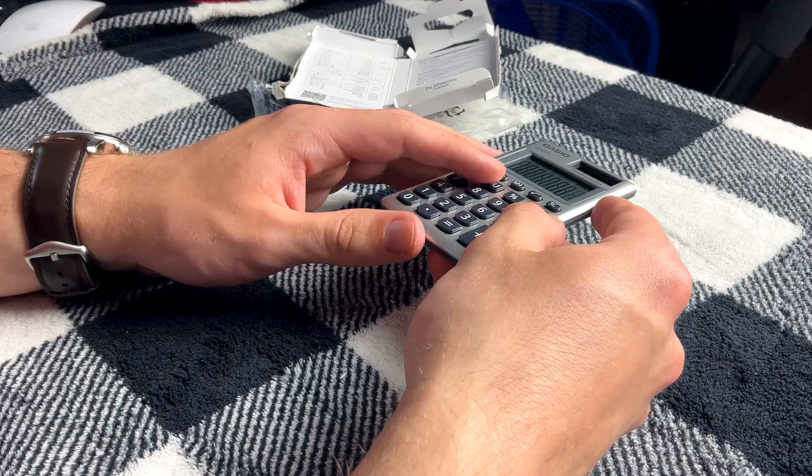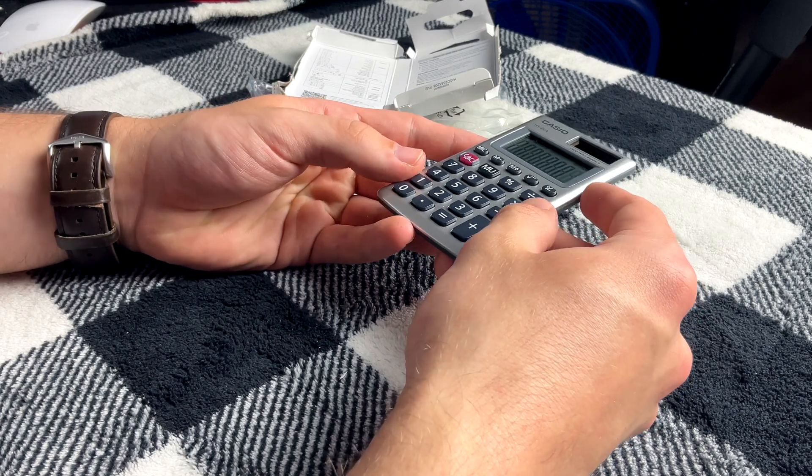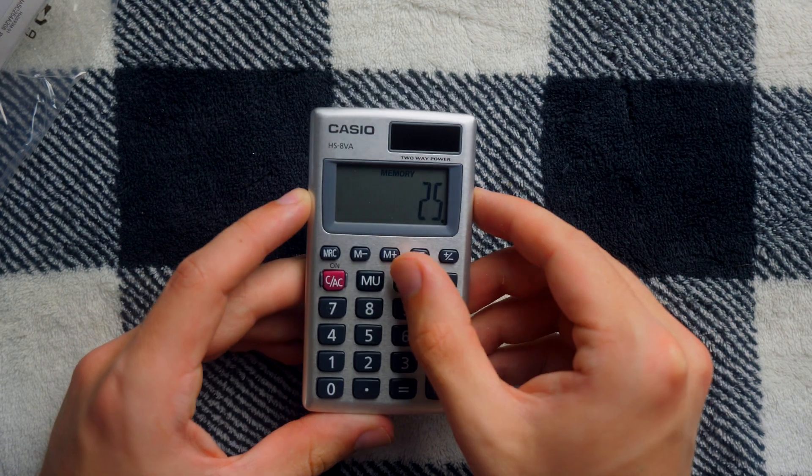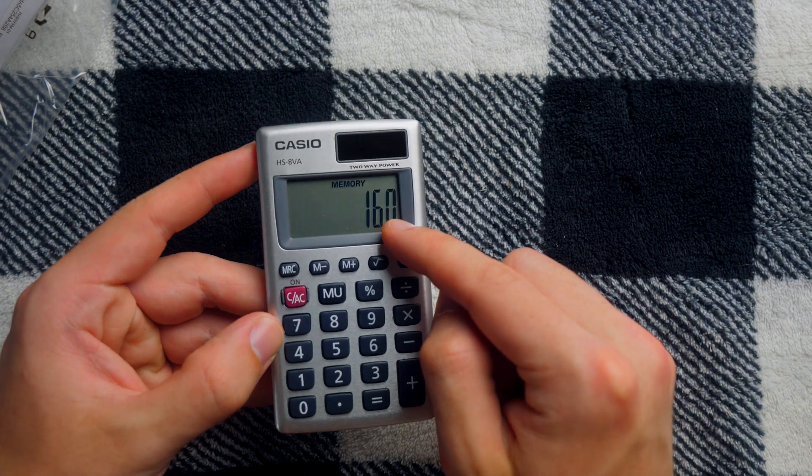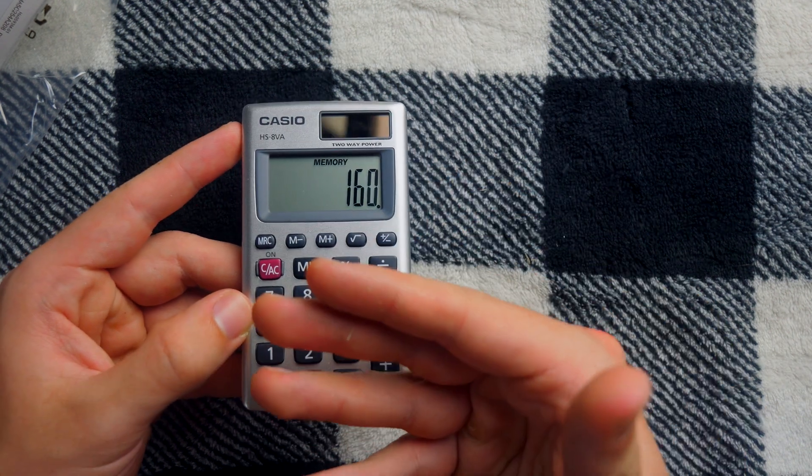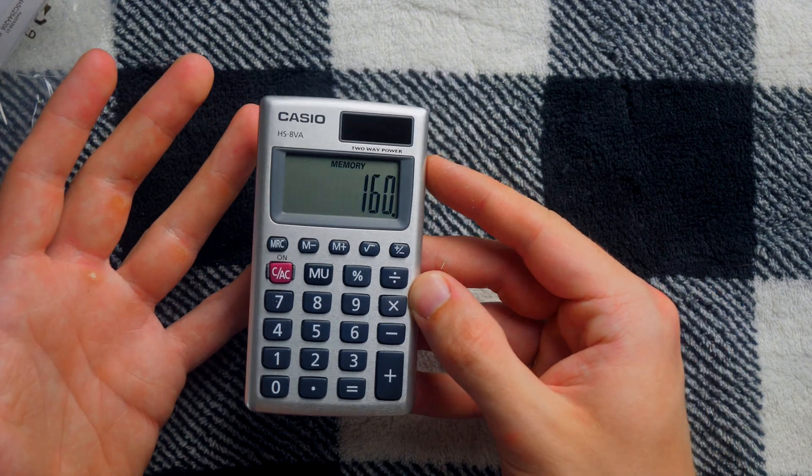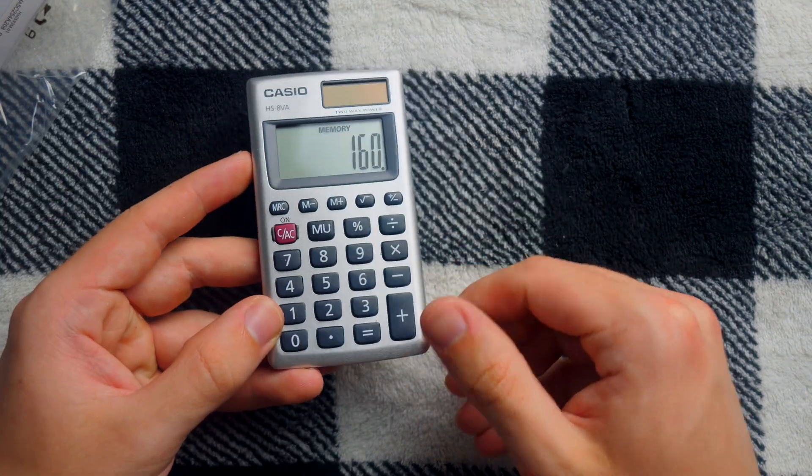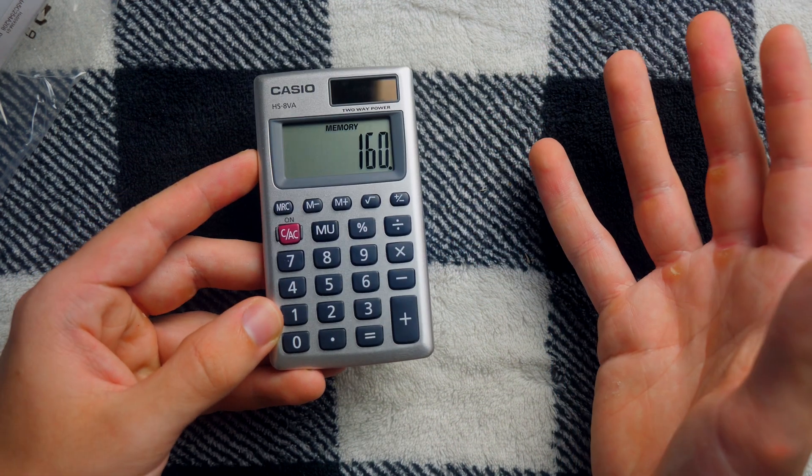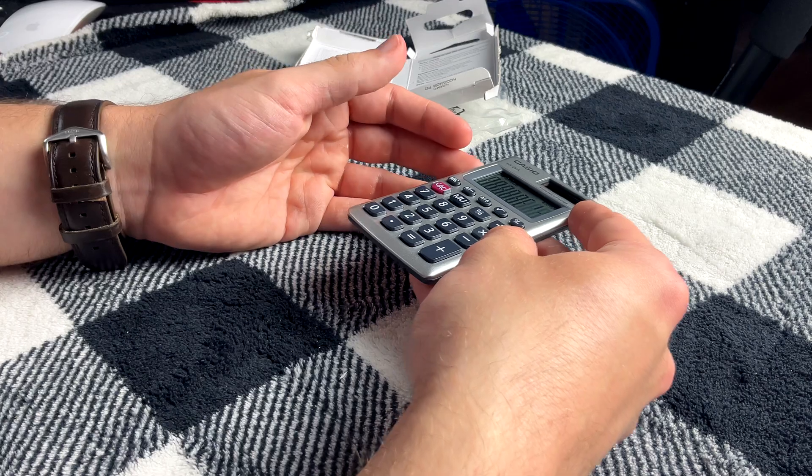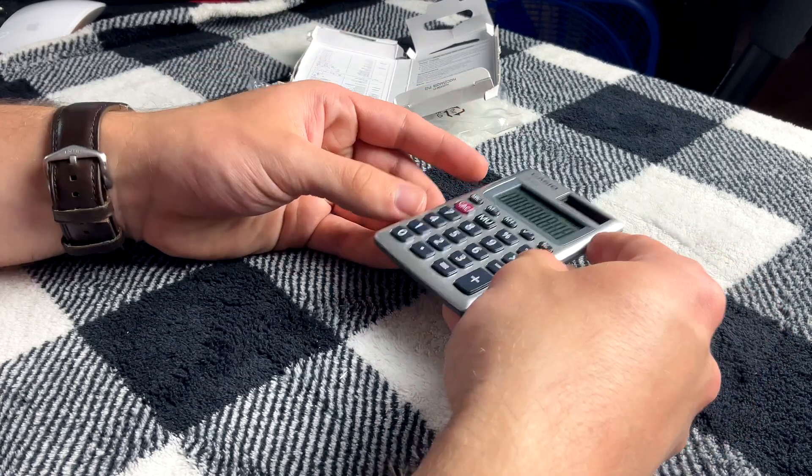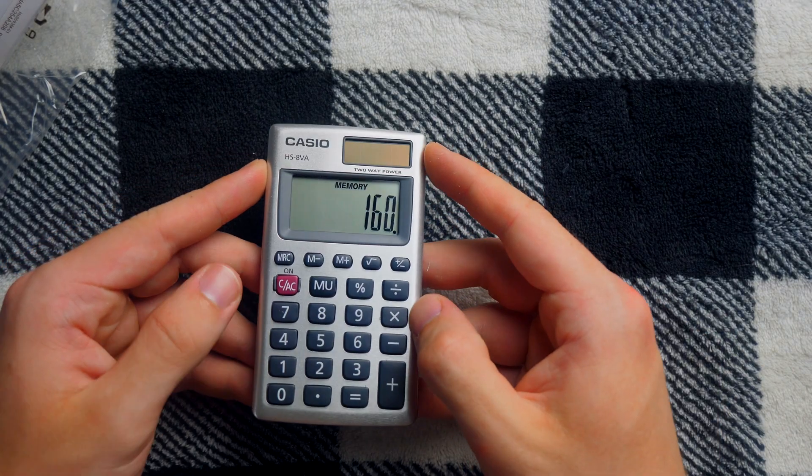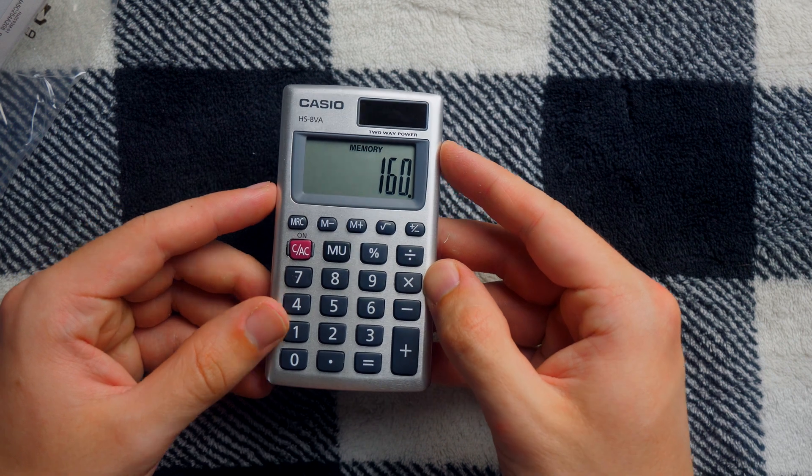Finally, as for the MU key, this is actually a markup key. So the numerical example that the instructions give is 120, markup, 25%. So what this is going to give us is the number that 125 is 75% of. Like we bought something for 120 dollars. If we mark it up to 160, then the profit would be 25%. So that's how that key works. Pretty handy.